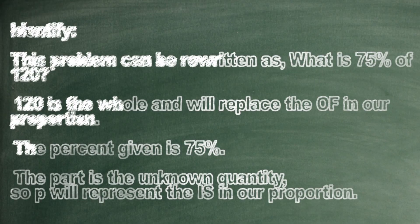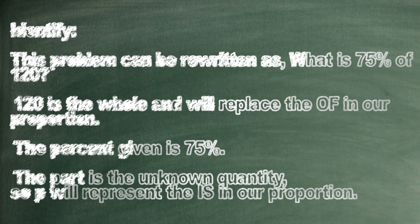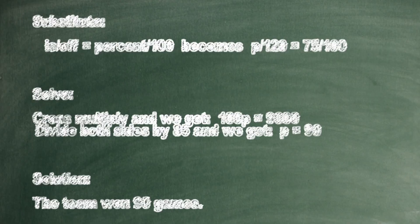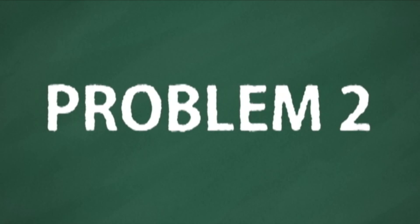This problem can be rewritten as what is 75% of 120? 120 is the whole and will replace the of in our proportion. The percent given is 75%. The part is the unknown quantity. So P will represent the is in our proportion.